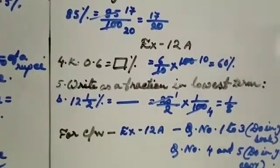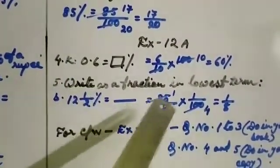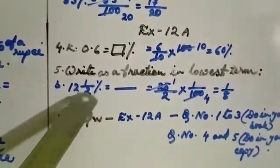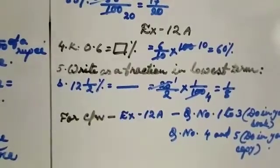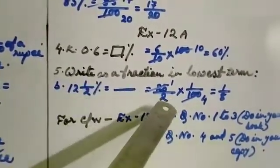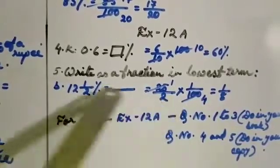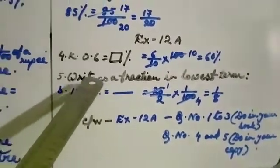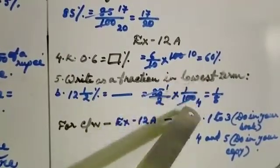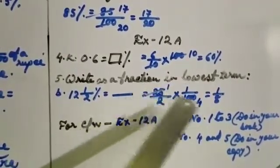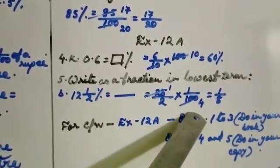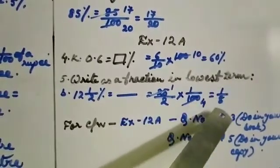Case number 5: Write as a fraction in lowest terms. 12 and 1 by 2 percent equals dash. First change the mixed fraction to an improper fraction: 12 times 2 is 24, plus 1, gives 25 by 2. Then multiply by 1 by 100. Cross multiply — 25 times 1 is 25, and 2 times 4 gives 100 by 4 into 25, giving 1 by 8.